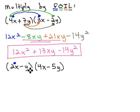We'll start with the first term and distribute it through the other parentheses. 2x times 4x is 8x squared. 2x times negative 5y is negative 10xy.